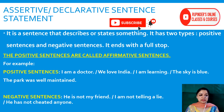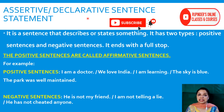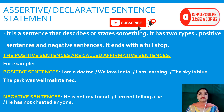Have a look at examples of positive sentences: 'I am a doctor.' 'We love India.' 'I am learning.' 'The sky is blue.' 'The park was well maintained.' These are positive or affirmative sentences. Examples of negative sentences: 'He is not my friend.' 'I am not telling a lie.' 'He has not cheated anyone.' Together, positive and negative sentences make assertive or declarative sentences.